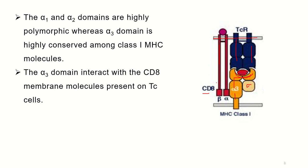Because the antigen varies and changes, the sequence of alpha 1 and alpha 2 domains also changes, making this the polymorphic region of Class 1 MHC. The upper region is polymorphic and will change, while the lower region is the conserved region — meaning this region does not change across MHC molecules. The co-receptor CD8 on the T cell interacts with the alpha 3 domain.